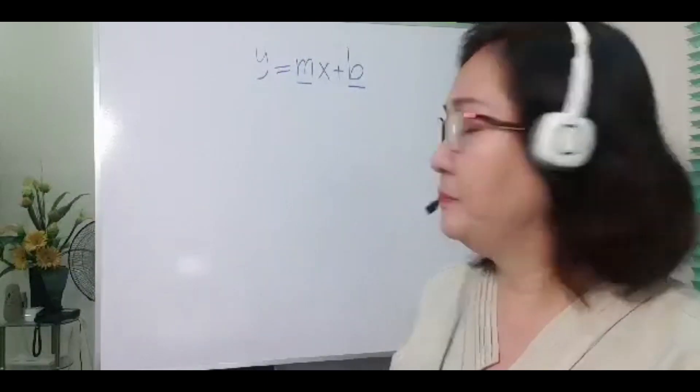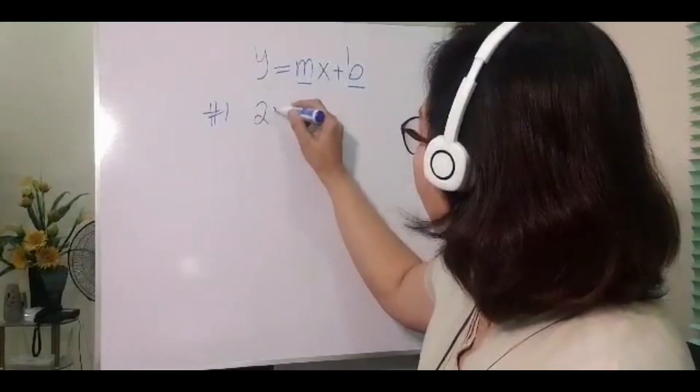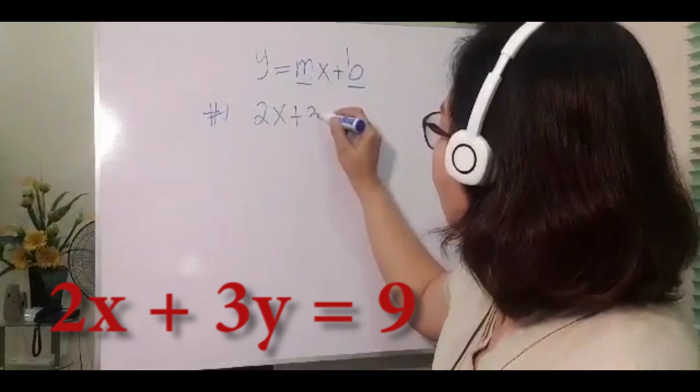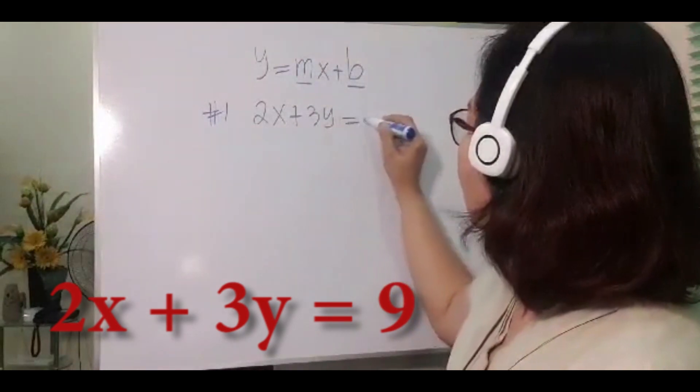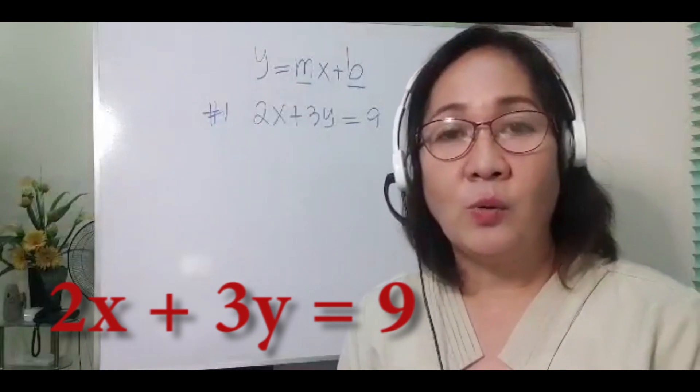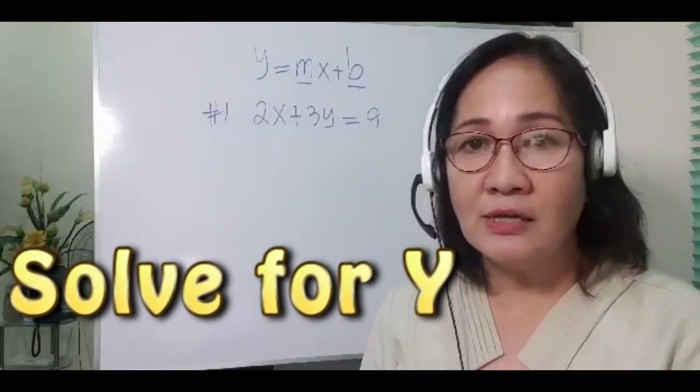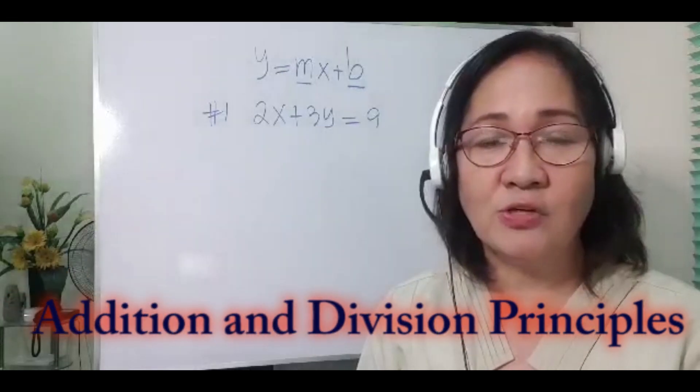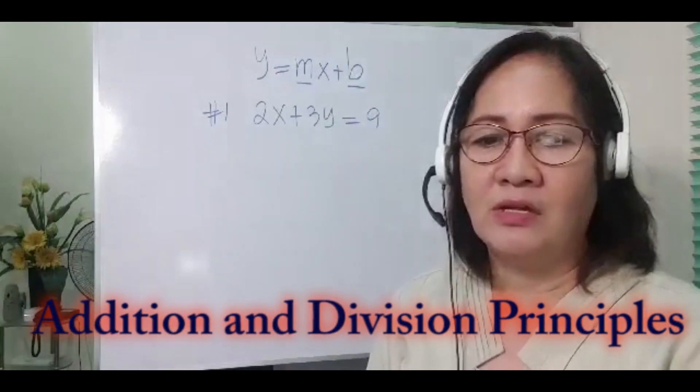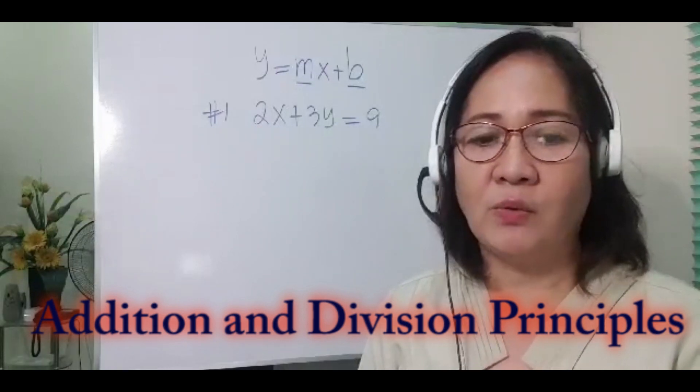Example: 2x plus 3y is equal to 9. Okay, we're going to solve for y using the addition and division principles to get the y term by itself on one side of the equation.